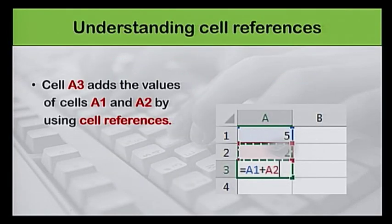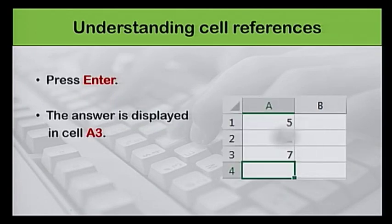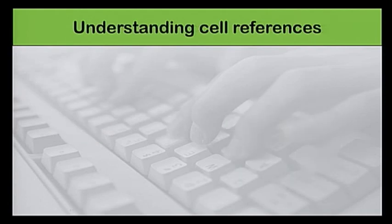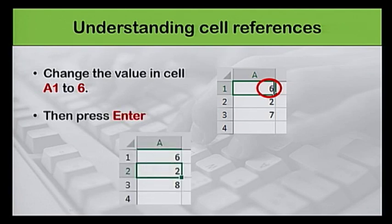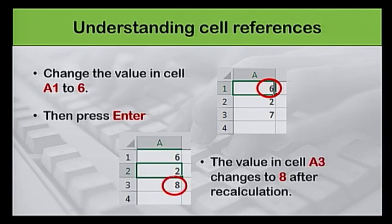The formula in cell A3 adds the values of cells A1 and A2 by making cell references. When you press Enter, the formula calculates and displays the answer in cell A3. If the values in the referenced cells change, the formula automatically recalculates. Like in this example, if the value in cell A1 changes to 6, then the value in cell A3 is automatically updated to 8.